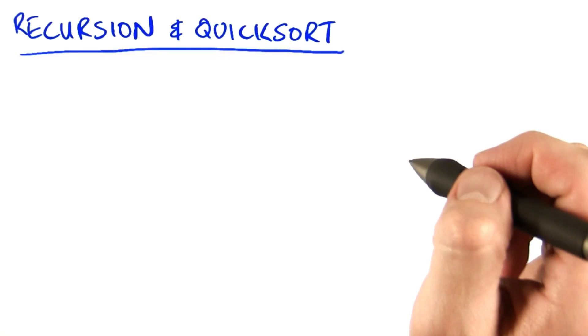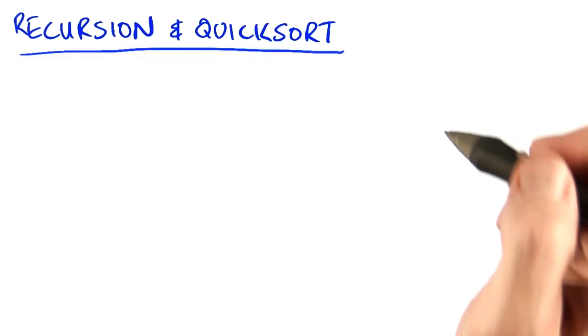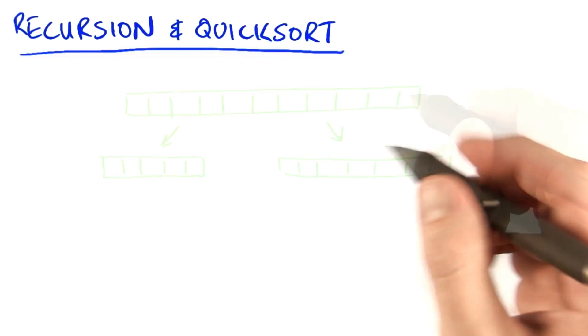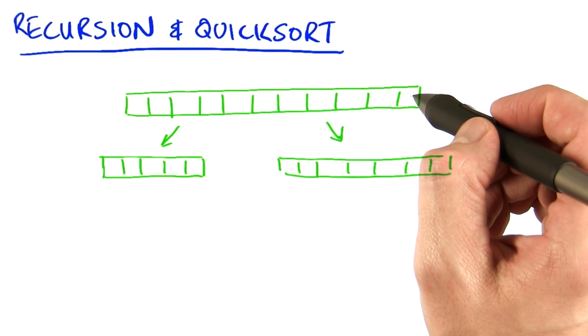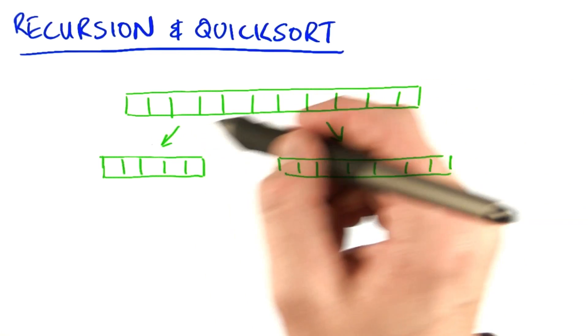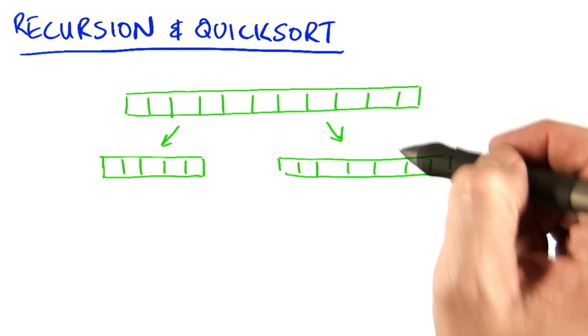If you remember from one of your earlier lectures, quicksort is what's called a divide and conquer algorithm. It works by partitioning an array of data into two pieces, partitioning based on what's less than or greater than a pivot value.